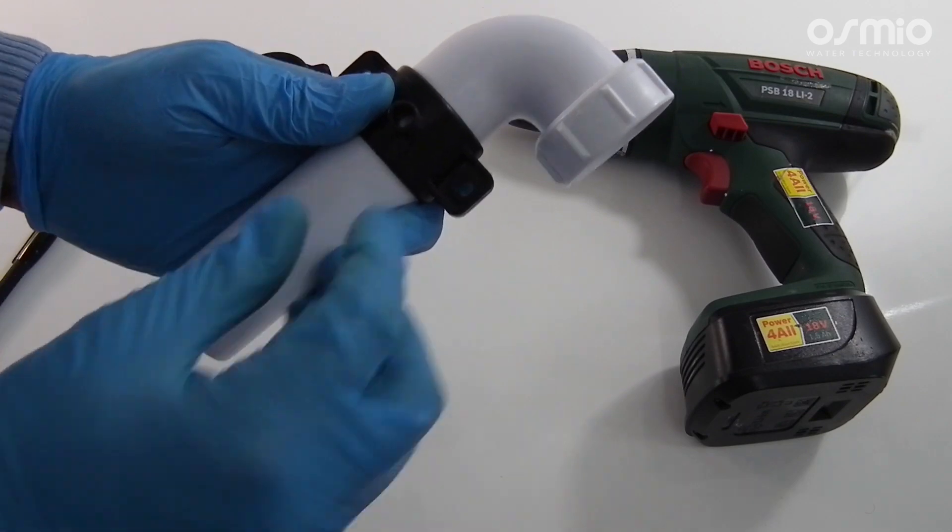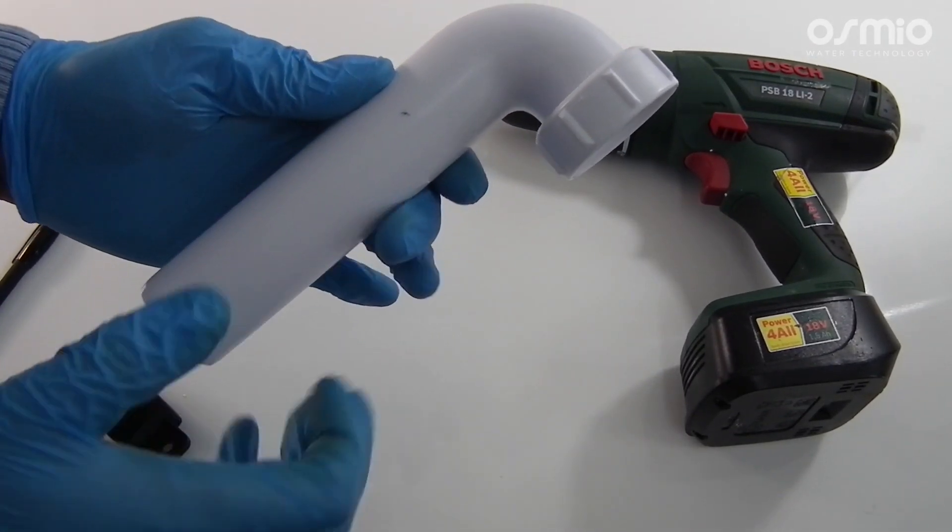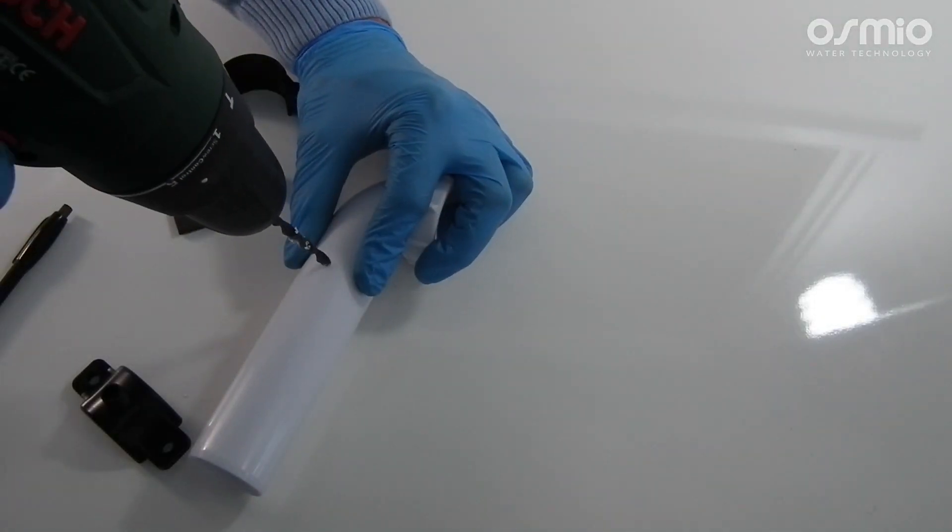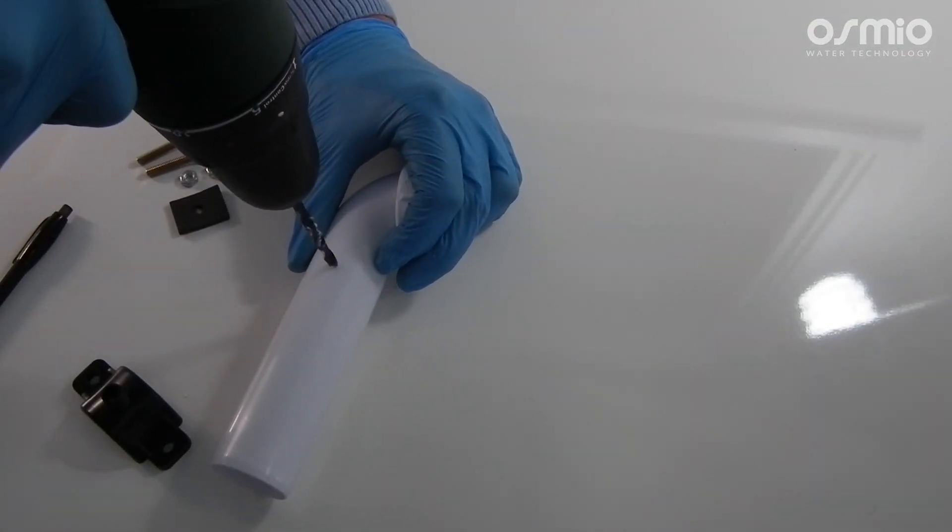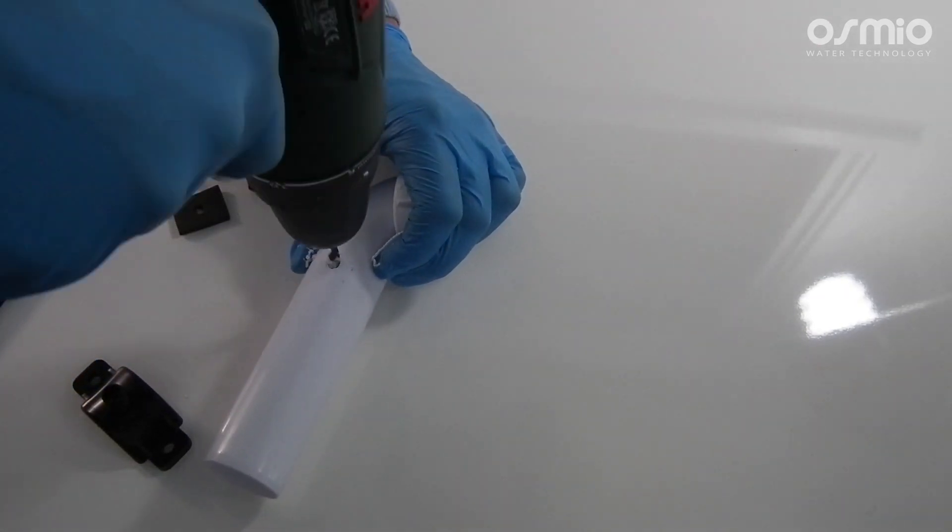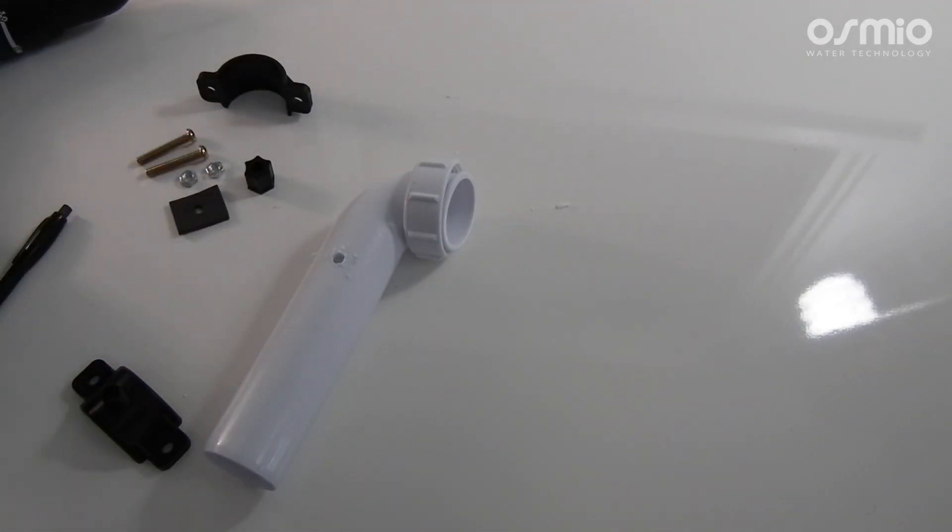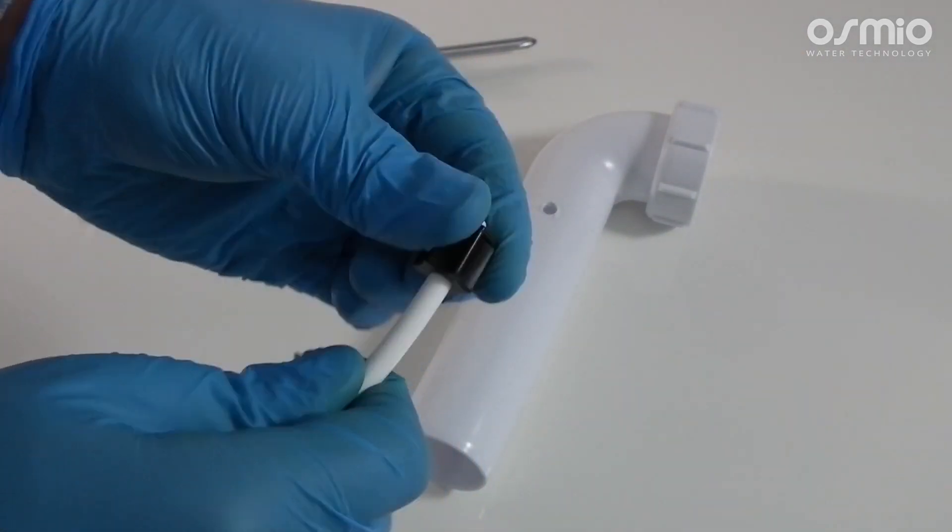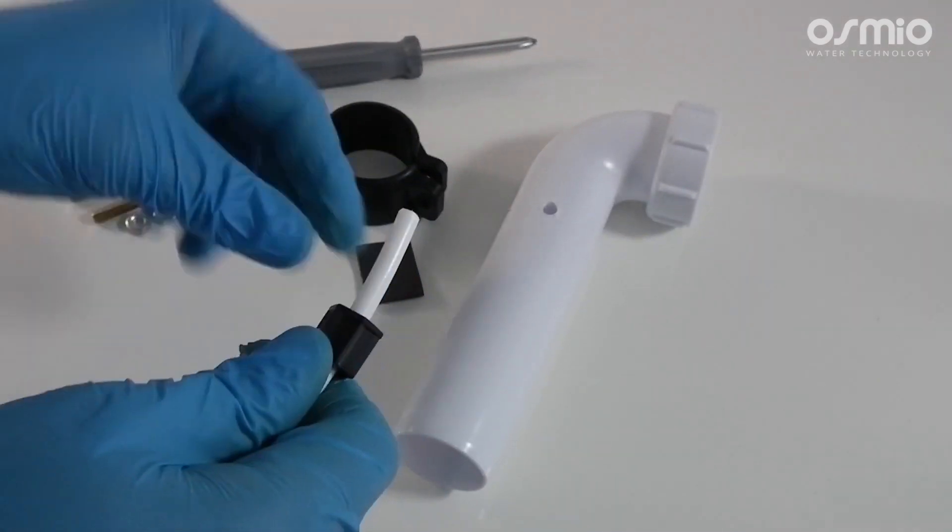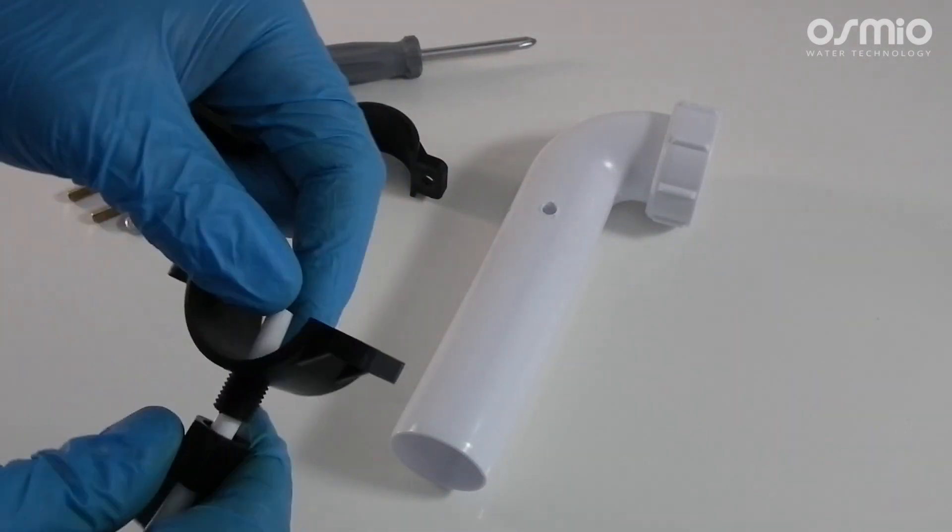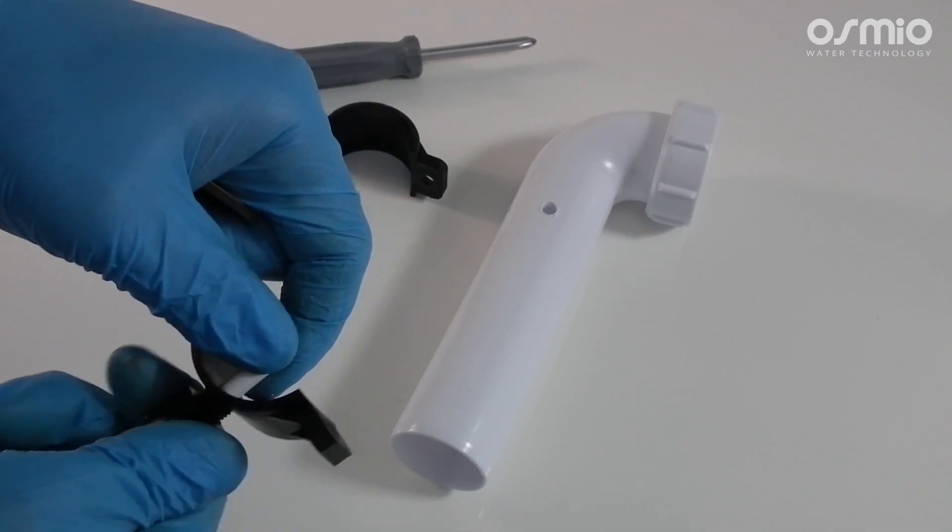First we take the drain saddle and marker pen to mark the correct spot. Then we use the drill to drill a hole into the drain pipe. Use the plastic fastening nut first and slide it on the tubing, then slide the tubing through the hole on the drain saddle and fasten the plastic nut.